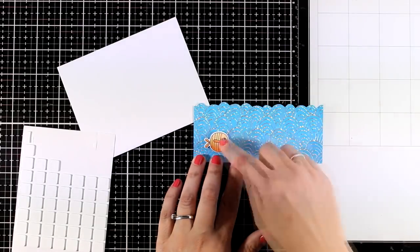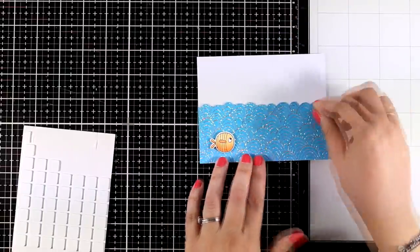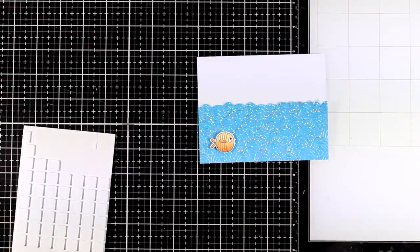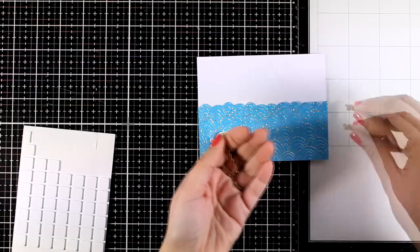I'm going to pop the fish on top of my ocean and this is how the card is going to look. Before I stick the ocean down I'm going to add the sentiment.